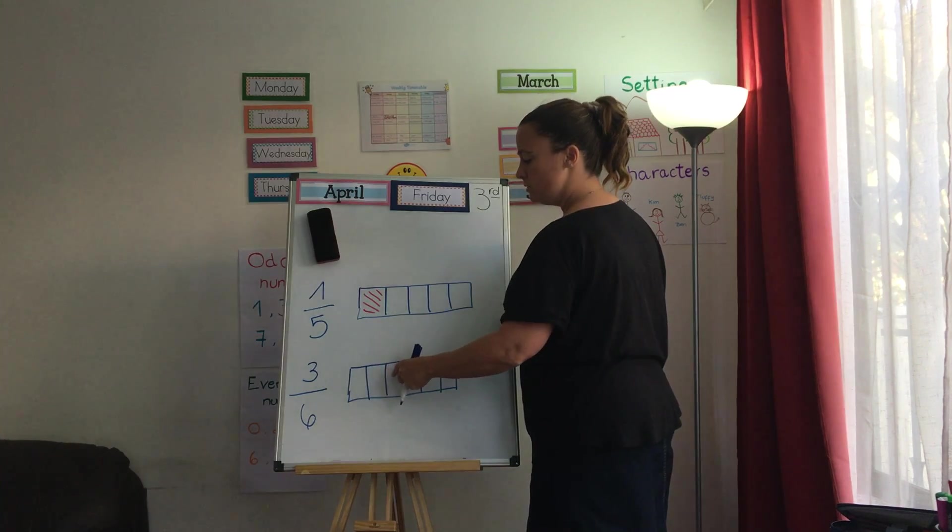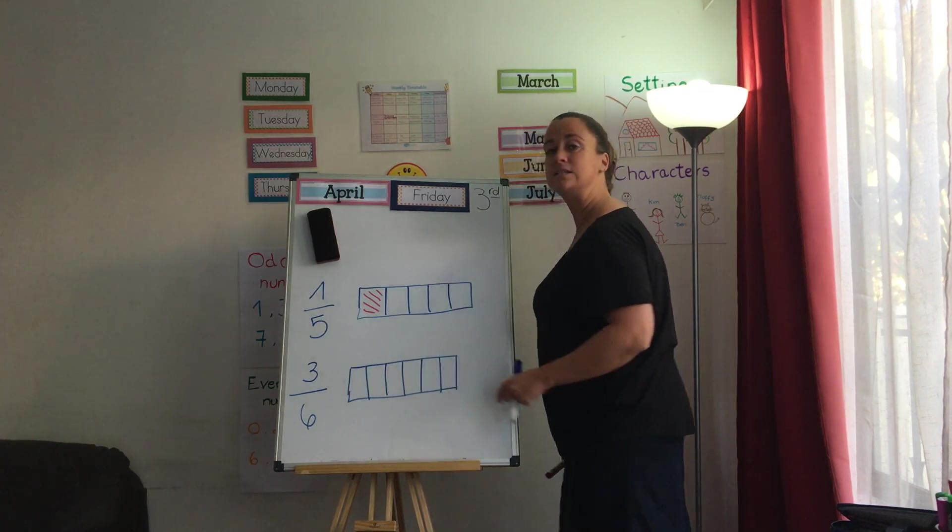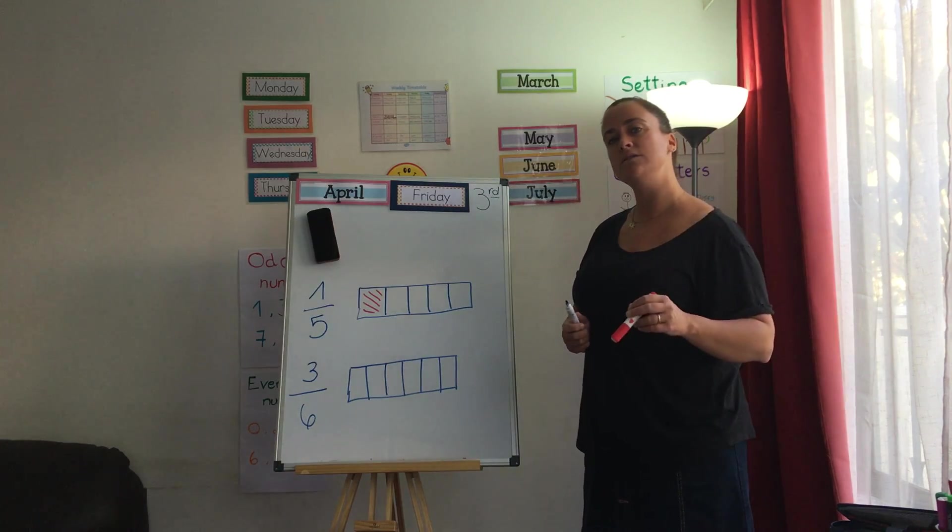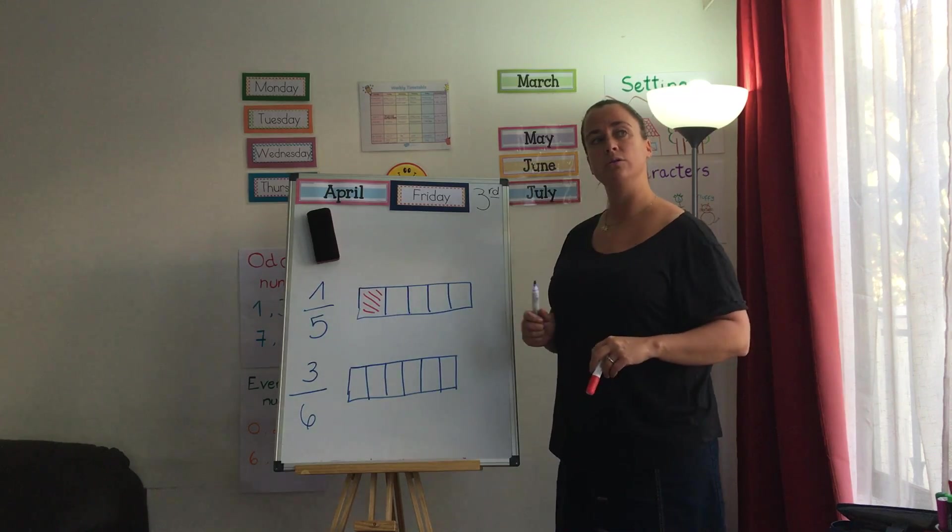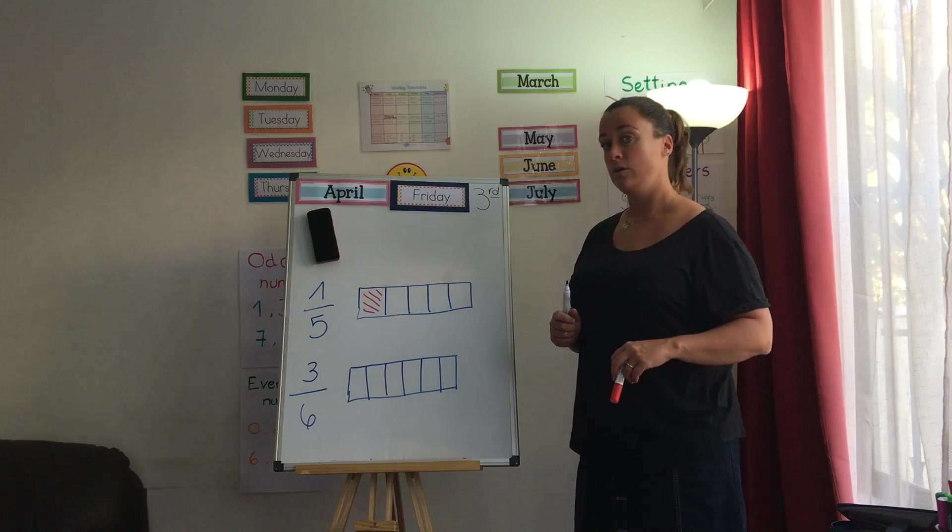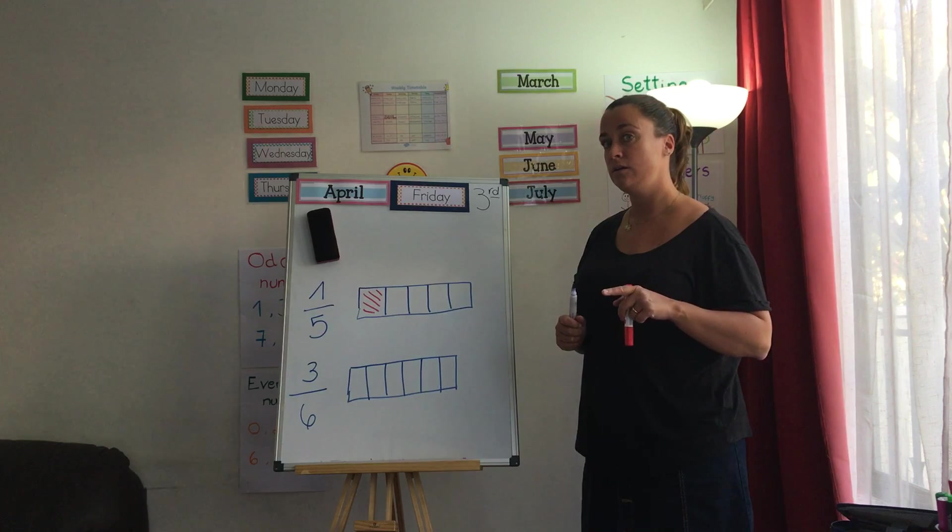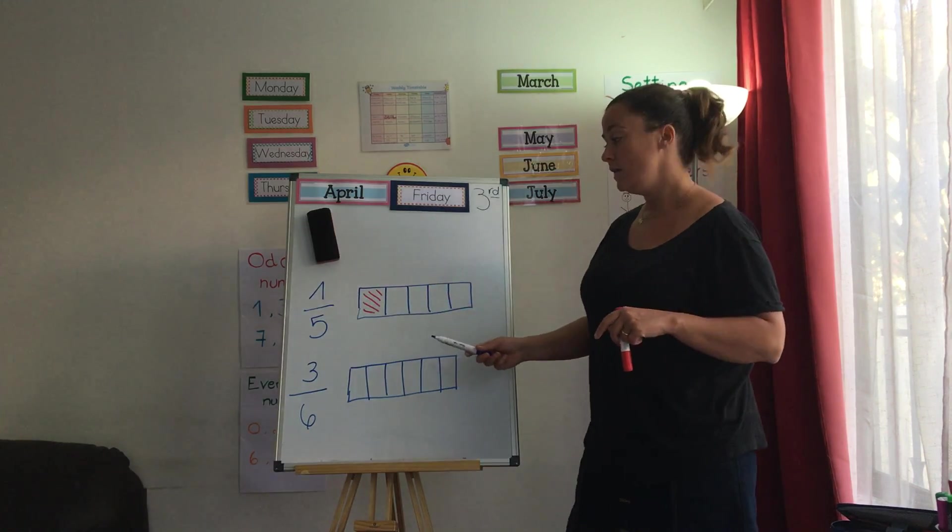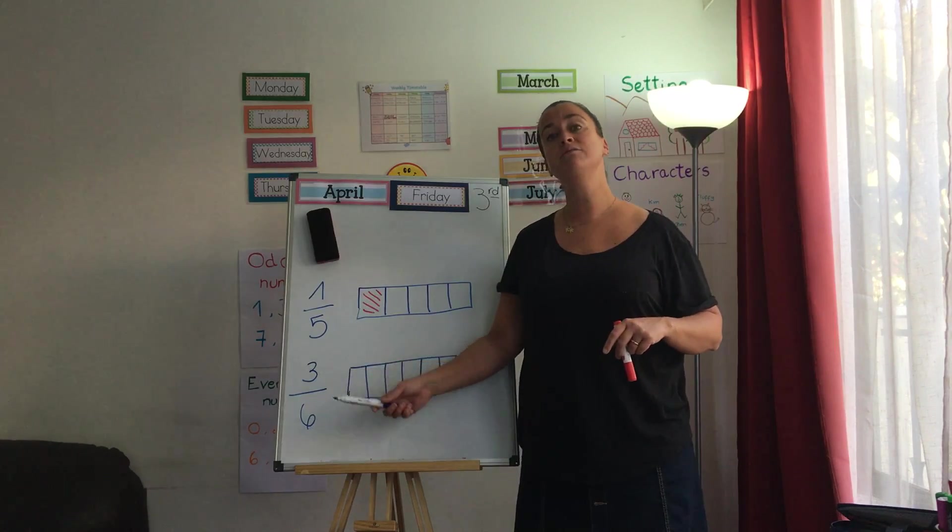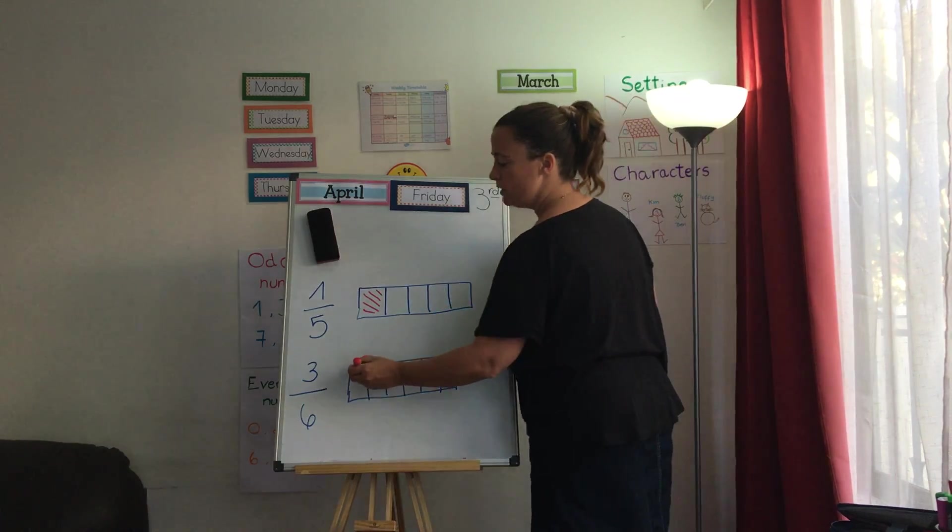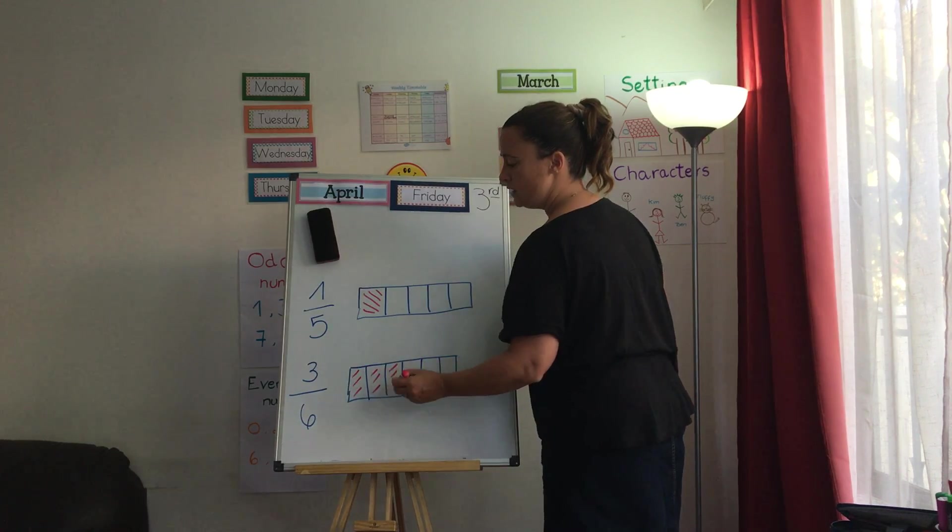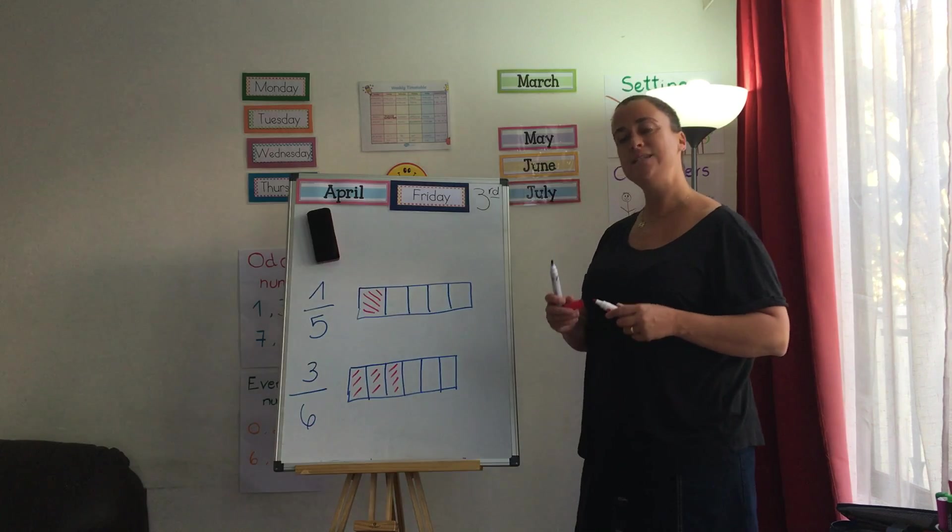1, 2, 3, 4, 5, 6. Fantastic. Super. Remember, how many parts of the whole do I have to colour? Remember, the answers are always here. 3 parts out of 6. So I have to colour 1, 2, 3. Out of 6.